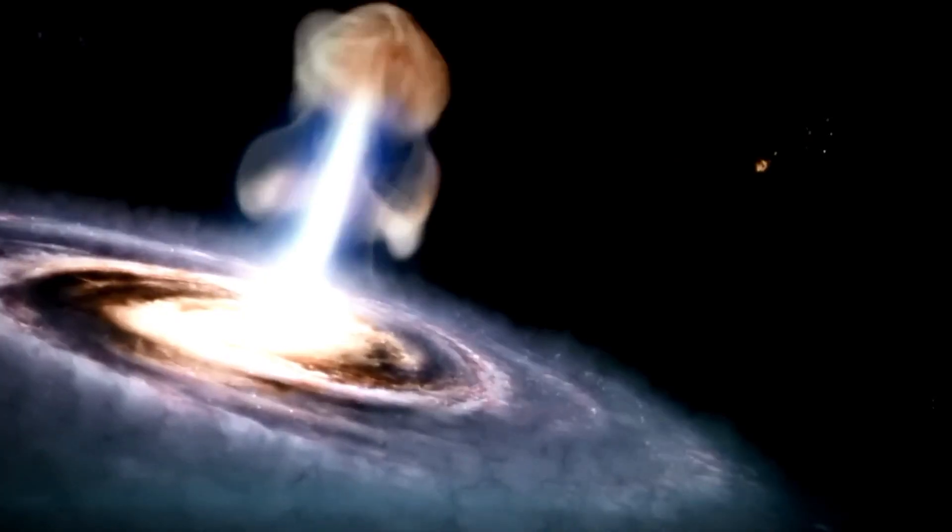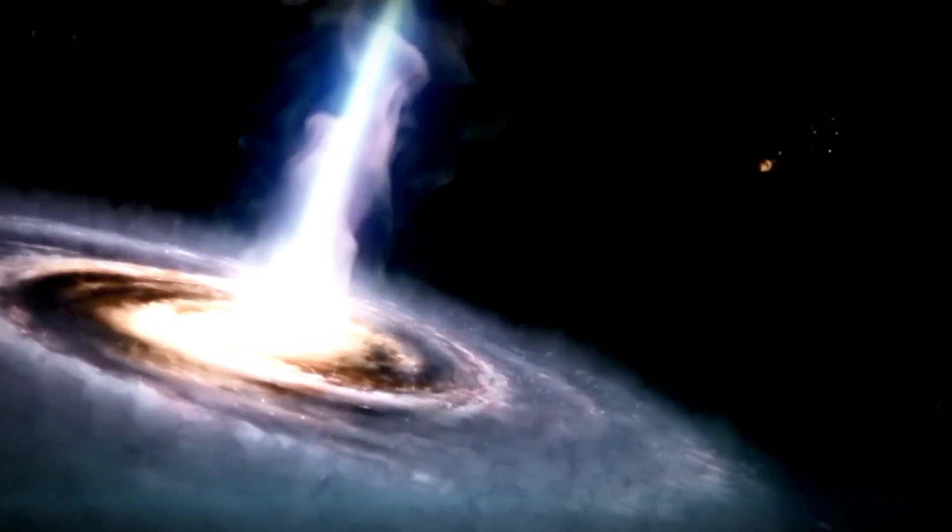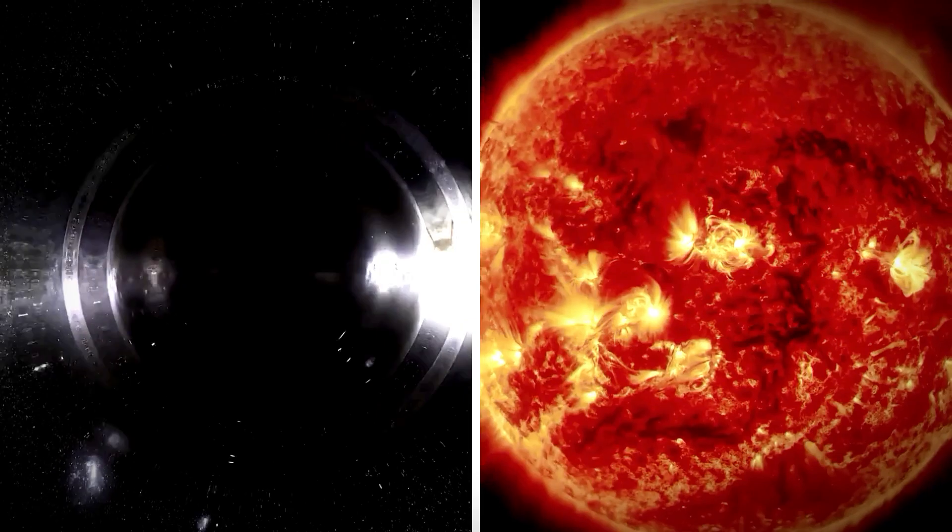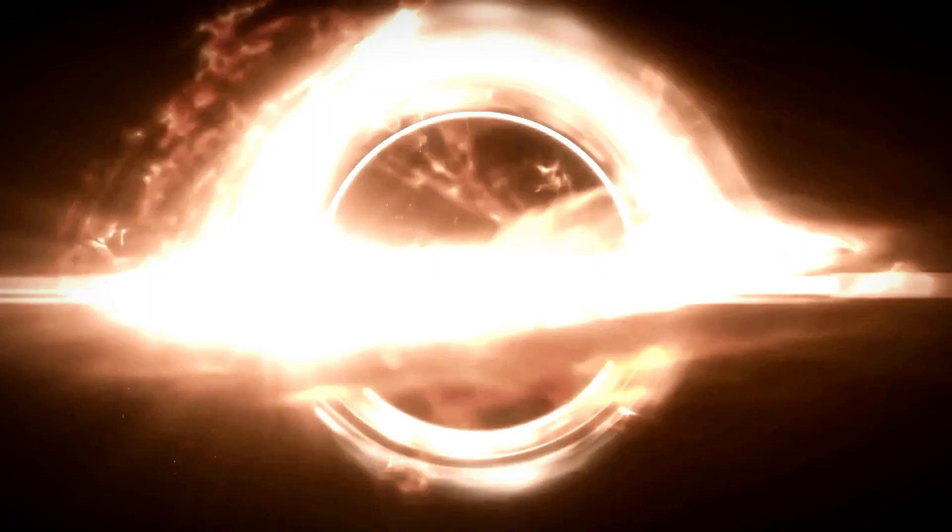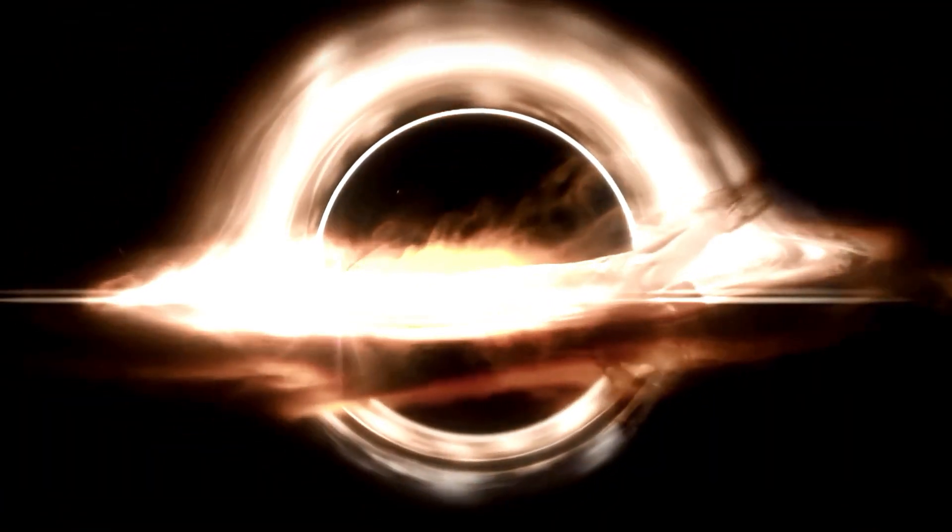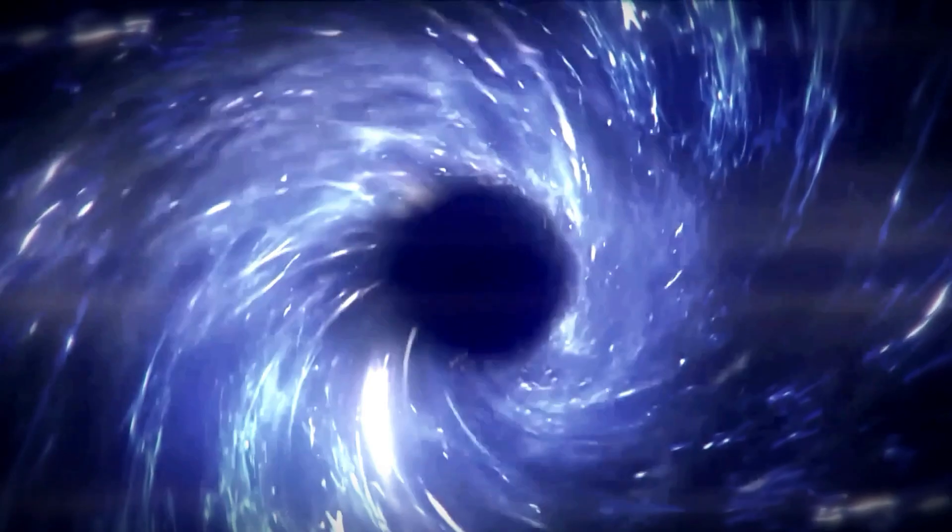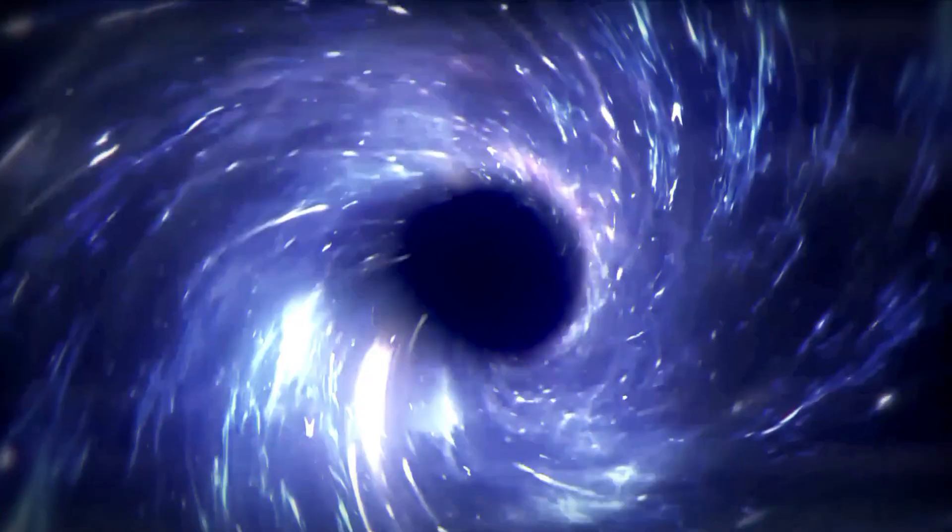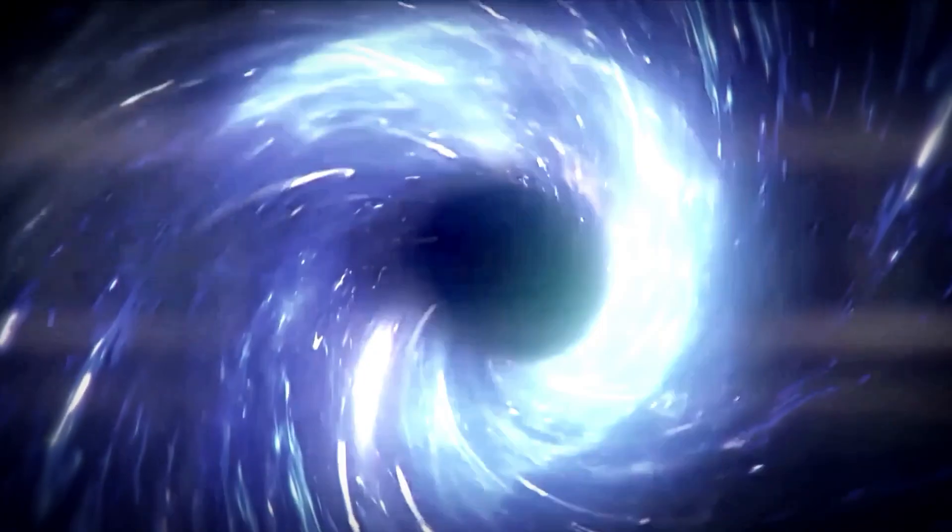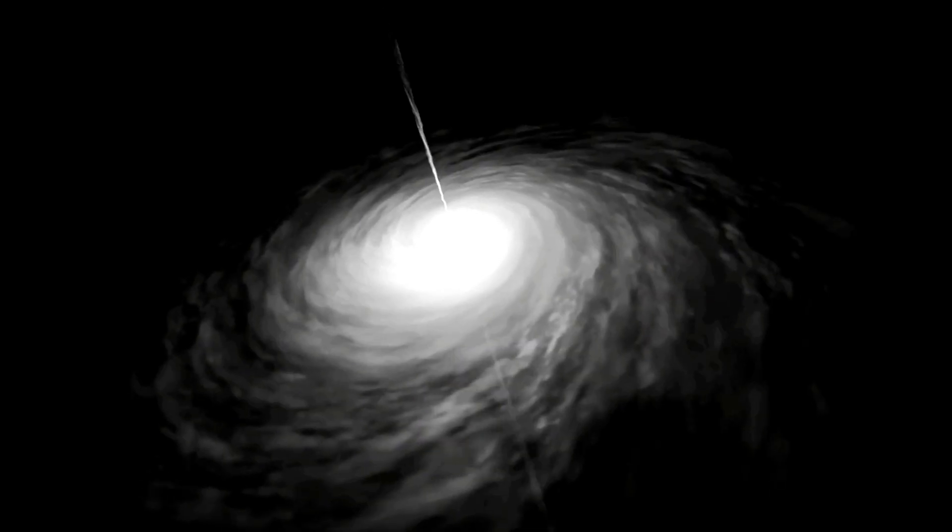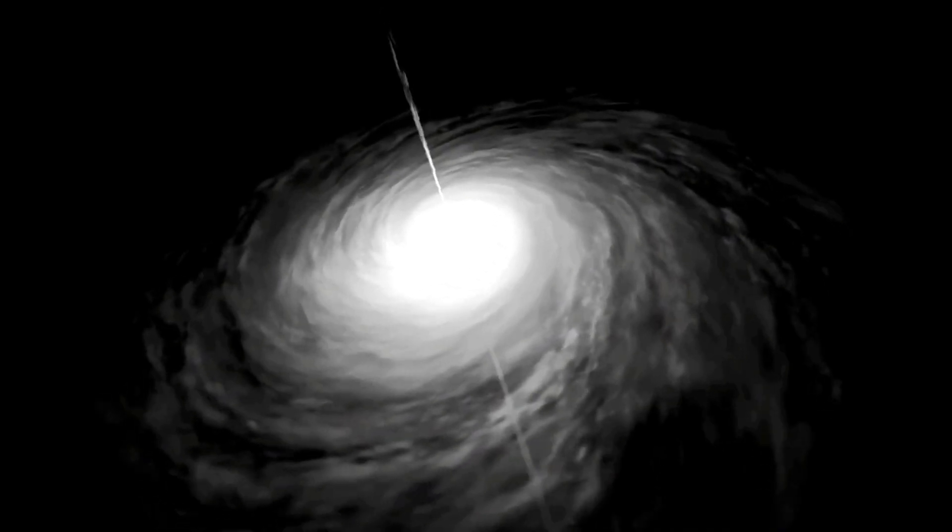However, when a black hole and its companion star orbit at a much larger distance, the star survives and remains intact. By that point, the black hole will be quiescent and much harder to find. And since black holes don't emit any light, their tremendous gravity is the only way to detect them. But under the right circumstances, that gravity can help reveal them.